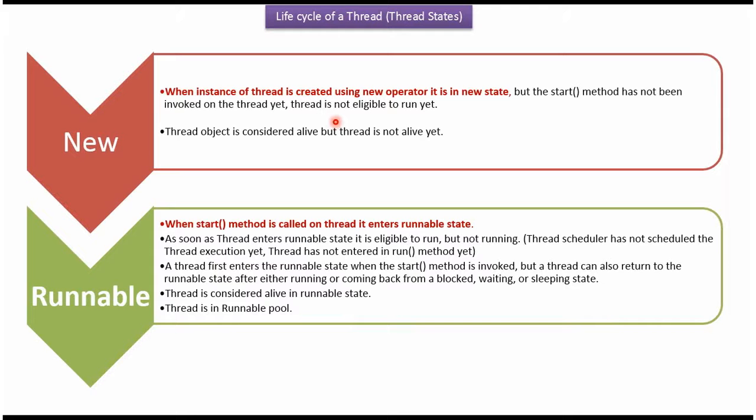When an instance of a thread is created using the new operator, the thread is in the new state but the start method has not been invoked yet, so the thread is not eligible to run. In the new state, the thread object is considered alive but the thread itself is not alive yet.